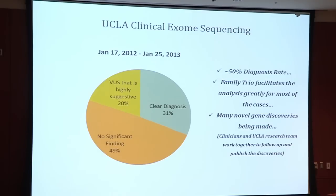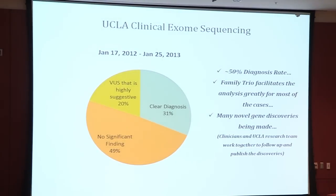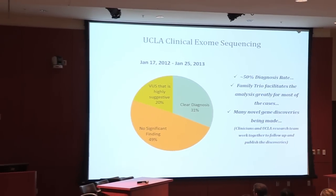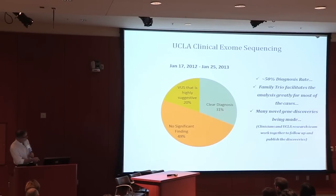We're finding about 20% of cases with a variant of unknown significance where you can't truly say it's absolutely clear-cut causal, but there's sufficient information that it's very interesting. Some of these are actually novel gene discoveries — so that blend of gene discovery in the context of clinical work is exciting and one of the reasons I'd like to push this forward. That still leaves a very large set where we find no significant finding in about 50%, which is consistent with the work going on at the University of Washington and across multiple genomic centers. As novel genes are found, many of these will be resolved.